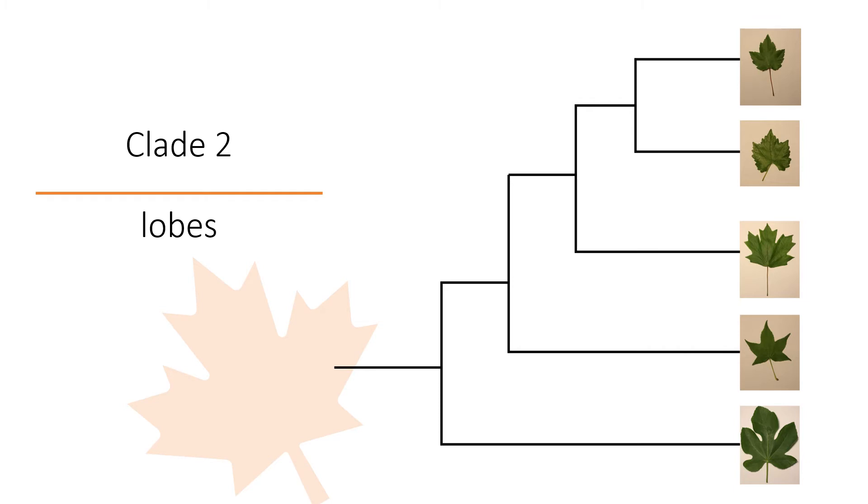The top OTU is the most closely related because of the similarity in lobe number and margin serration. Then the next closest relative is the middle leaf due to the presence of visible serrations on the lobes. The second leaf from the bottom has a similar number of lobes to the previous one, but without large serrations. Finally, the bottom leaf has the finest serration yet in the same number of lobes as the one before it.